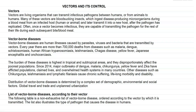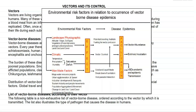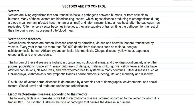Other diseases such as chikungunya, leishmaniasis, and lymphatic filariasis cause chronic suffering, long-term morbidity, as well as significant disability problems. Distribution of vector-borne diseases is determined by a complex set of demographic, environmental, and social factors. Global travel, trade, and unplanned urbanization are also viewed as reasons for the distribution of these vector-borne diseases.